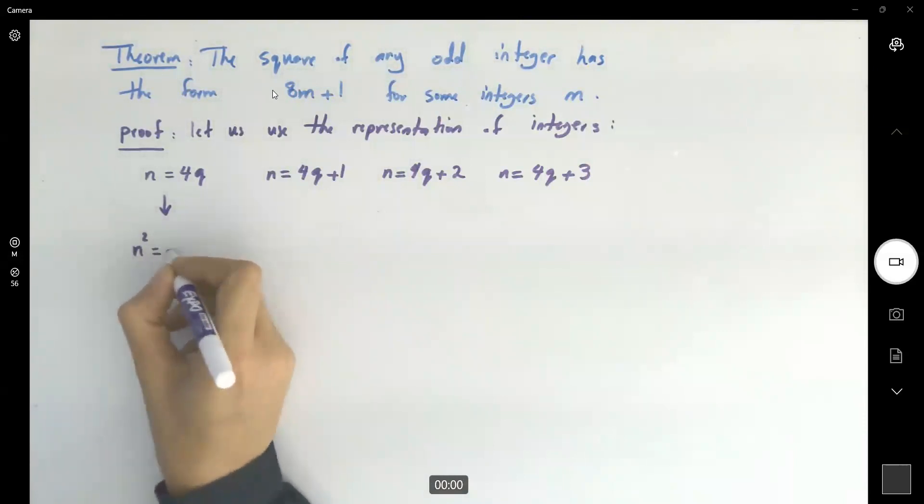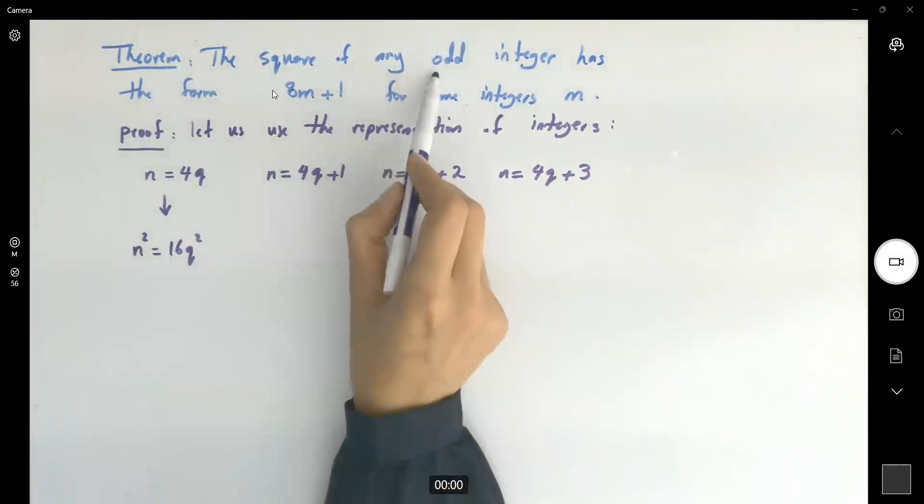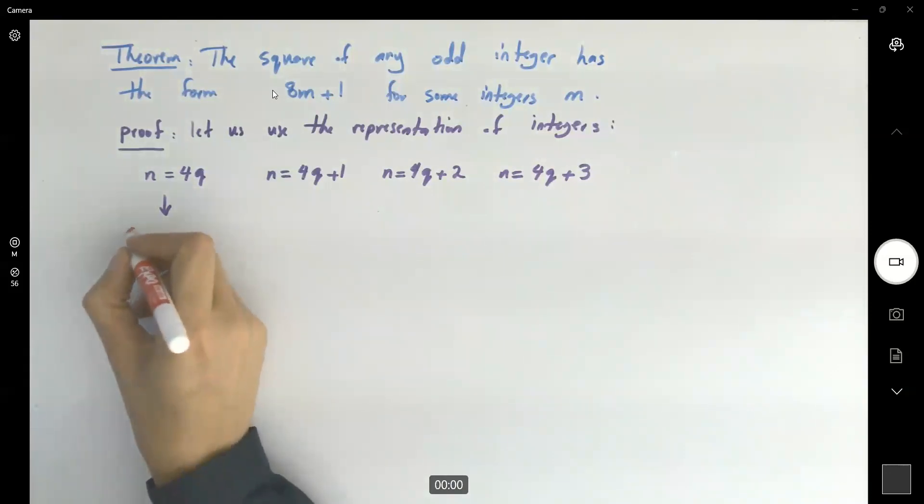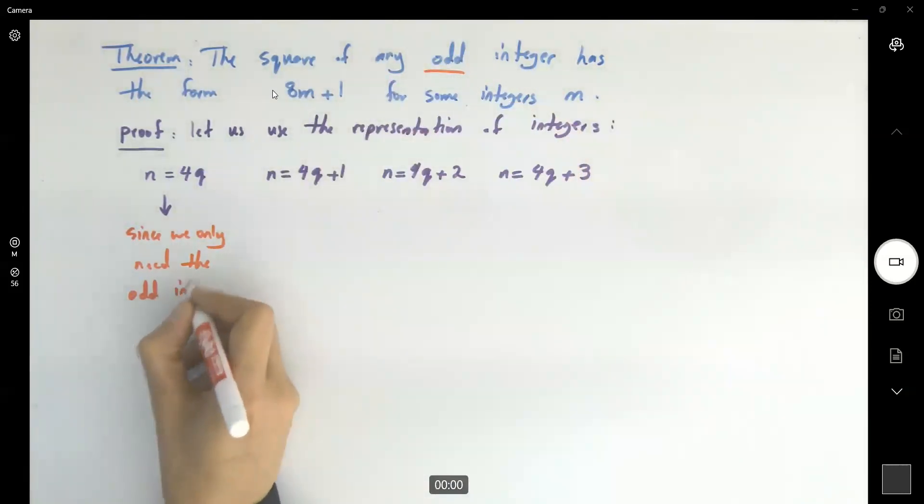n squared is equal to 16q squared. Note that you want to focus on odd integers. You could say that this is 2 times 2q, which is even. Since we only need the odd integers, we can ignore n equals 4q, which is 2 times 2q and is even.